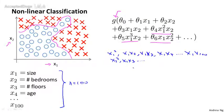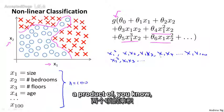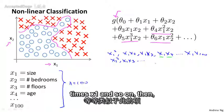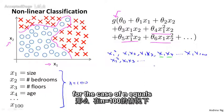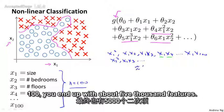And if you include just the second order terms, that is the terms that are a product of two of these terms, then for the case of n equals 100, you end up with about 5,000 features.